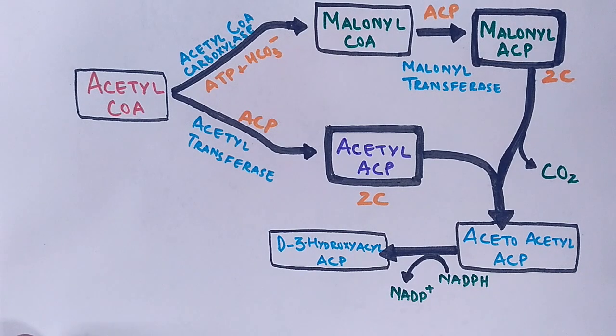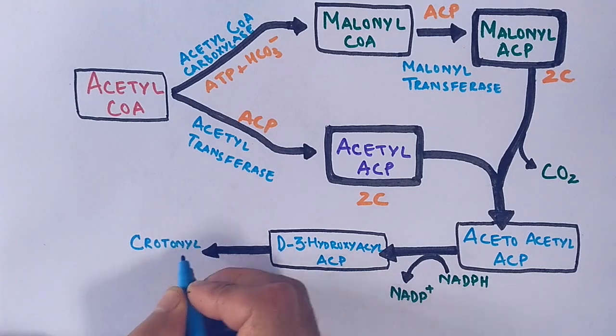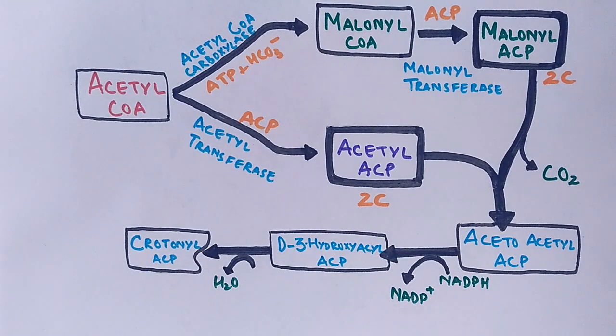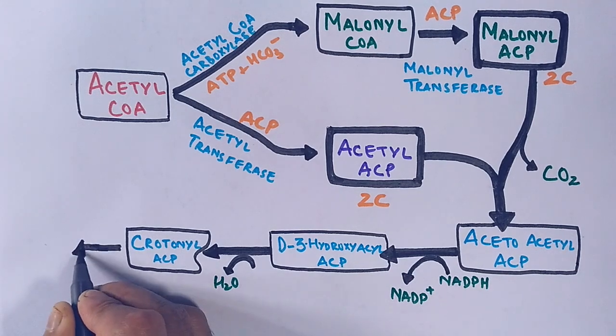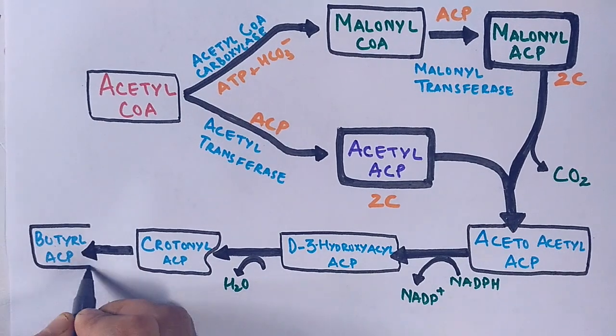Then after, we have a dehydration step where D-3-hydroxyacyl-ACP gets converted into crotonyl-ACP, where H2O is eliminated out of the reaction. And finally, we have the reduction again where crotonyl-ACP gets reduced to butyryl-ACP, a four carbon atom molecule.